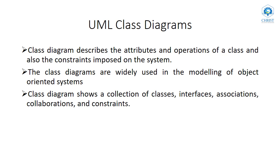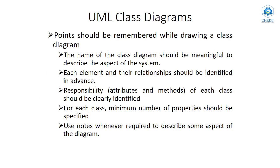Now what is a class diagram? We know that the term class is used in object-oriented programming languages. Class diagrams are diagrams that we use to represent or model object-oriented systems. A UML class diagram shows a collection of classes, interfaces, associations, collaborations, and constraints. Association means the kind of relationship that we have seen in the first video lecture.